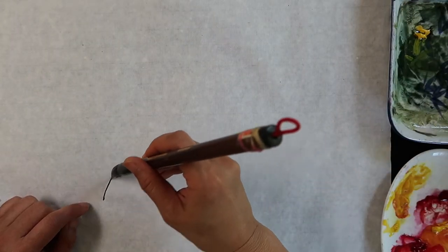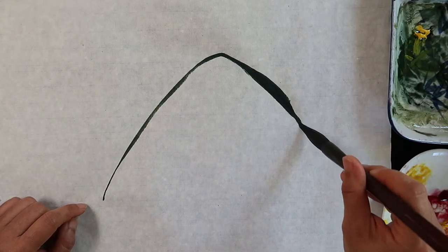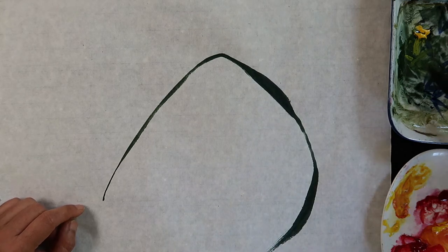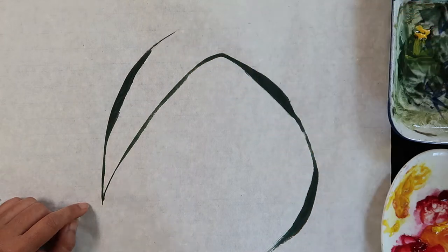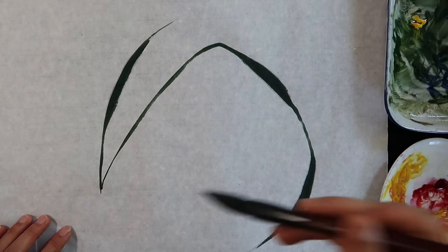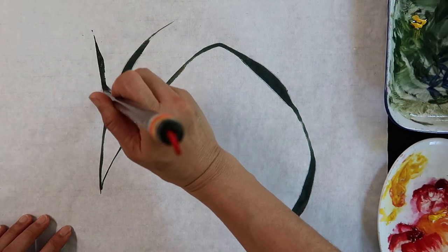I will start with the main leaf from the left side bottom up to the right. The composition will look like a circle. After that, I will paint some smaller leaves on the side.